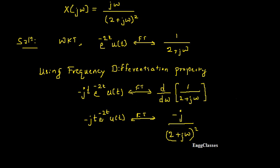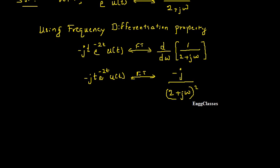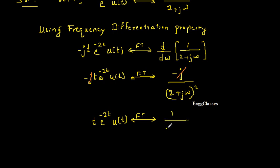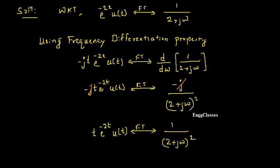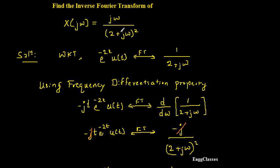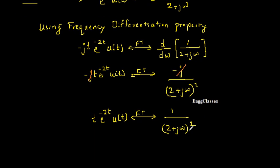Now, minus j from the property and minus j from the differentiation cancel each other out. Therefore we get: t · e^(-2t) u(t) has Fourier transform equal to 1 / (2 + jω)². Looking at the given problem, 2 + jω squared is in the denominator, and we are now obtaining exactly that term. This is the key trick.